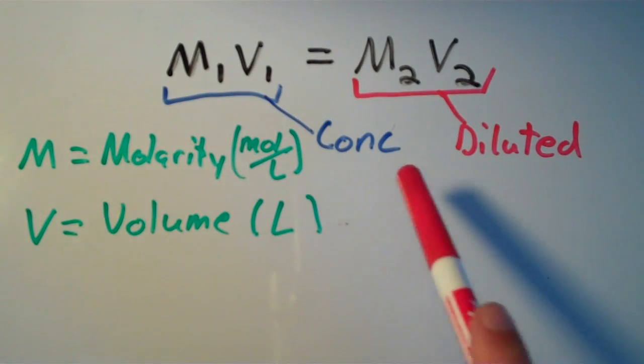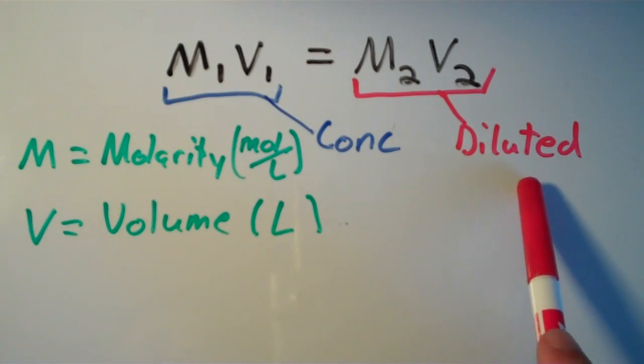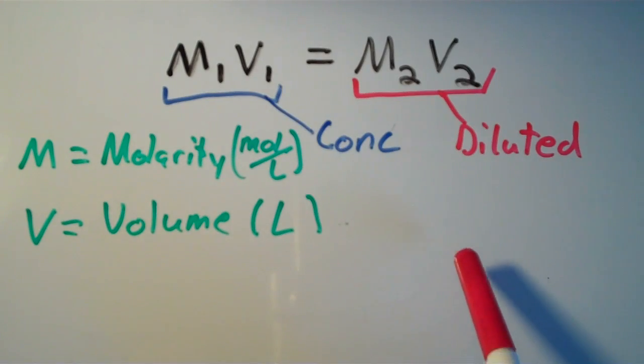So my concentrated solution has a molarity and a volume, and my diluted solution has a molarity and a volume. And they so happen to be related by this equation.